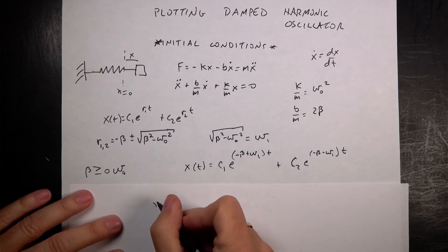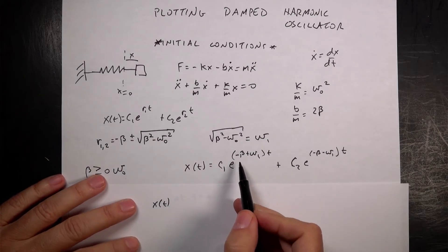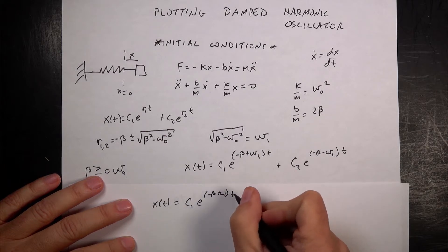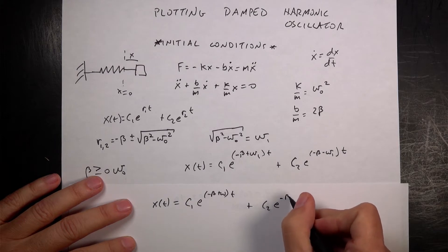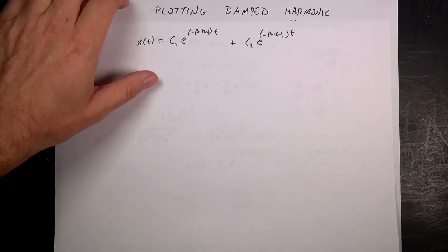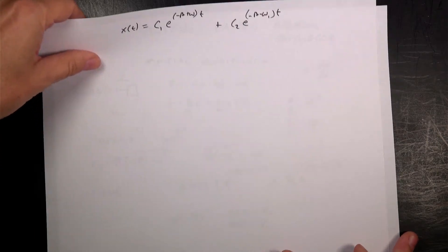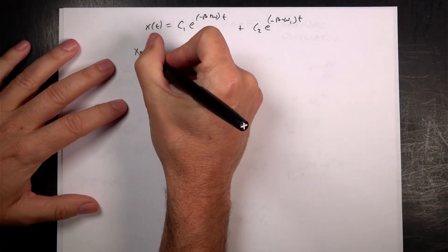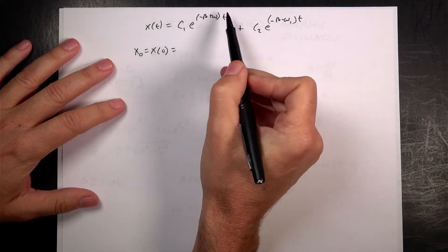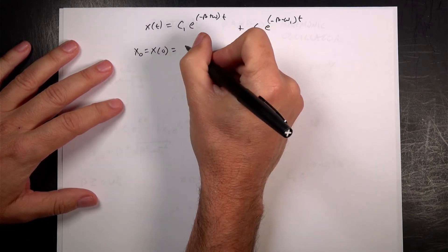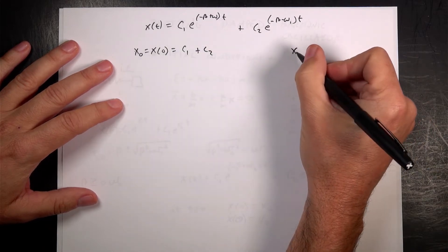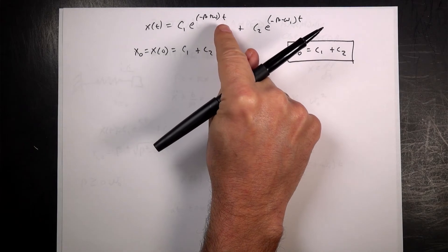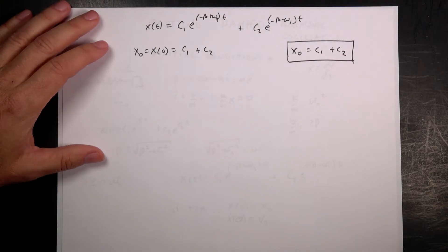Let's write x(t) = c₁e^(−β+ω₁)t + c₂e^(−β−ω₁)t. Setting t=0, e⁰ = 1, so x₀ = c₁ + c₂. I'm doing this for the case where β > ω₁.